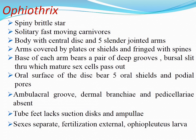Example: Ophiothrix, the spiny brittle star — solitary, fast-moving carnivore. Body has a central disc and five slender jointed arms covered by plates or shields fringed with spines. Each arm base bears a pair of bursal slits through which sex cells pass. The oral surface has five oral shields and podial pores. Ambulacral grooves, dermal branchiae, and pedicellariae are absent. Tube feet lack suction discs and ampullae. Sexes are separate, fertilization external, larval stage is ophiopluteus.